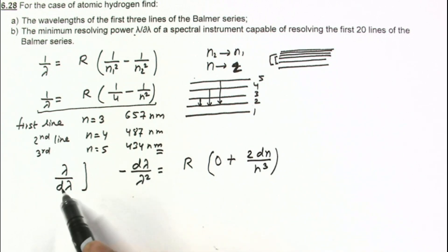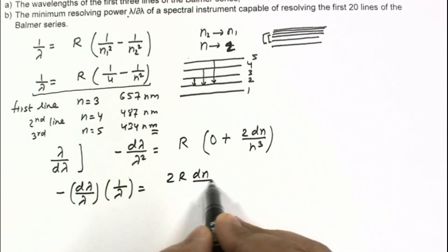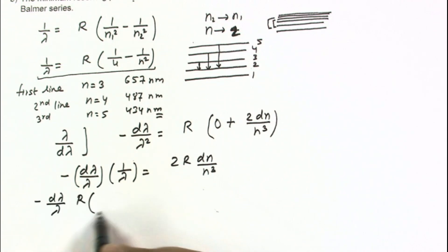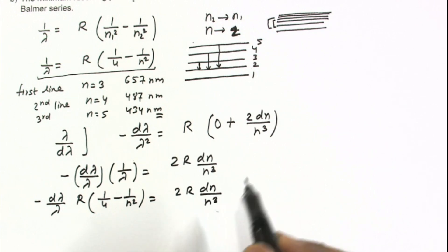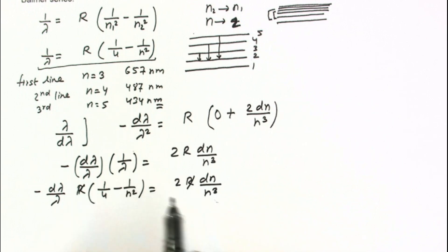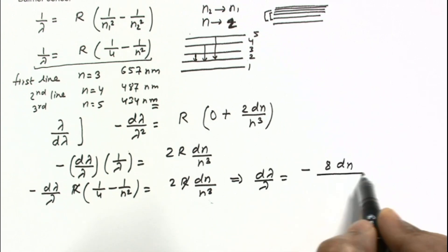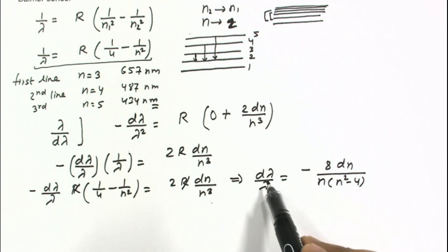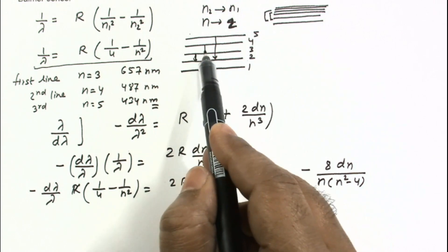Separating terms, −dλ/λ = (1/λ) · 2R dn/n³. Substituting 1/λ = R(1/4 − 1/n²) back in, the R cancels, and after simplification we get dλ/λ = −8 dn / [n(n² − 4)]. The result is negative because as n increases, λ decreases — going from one line to the next, the wavelength is decreasing.